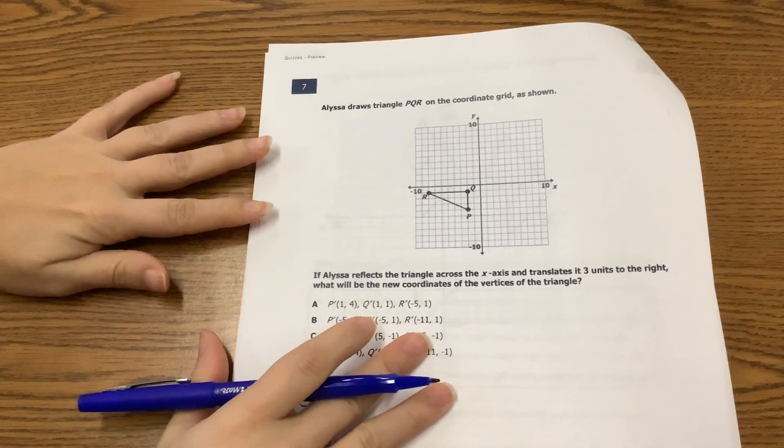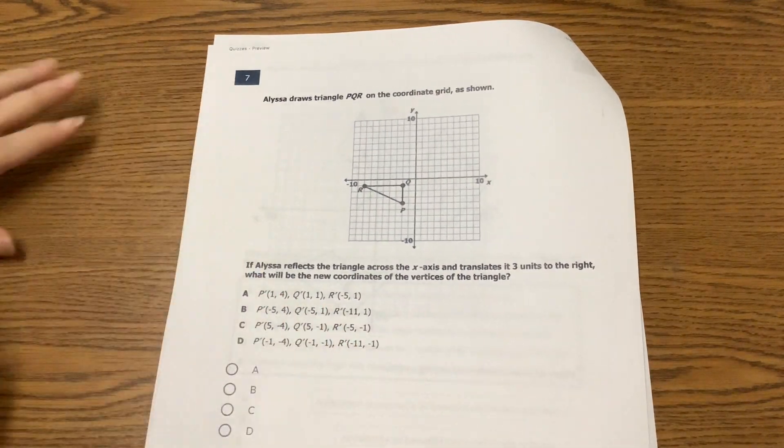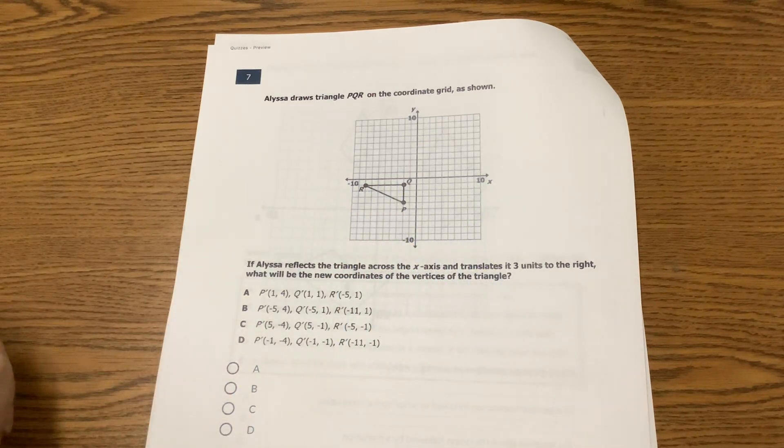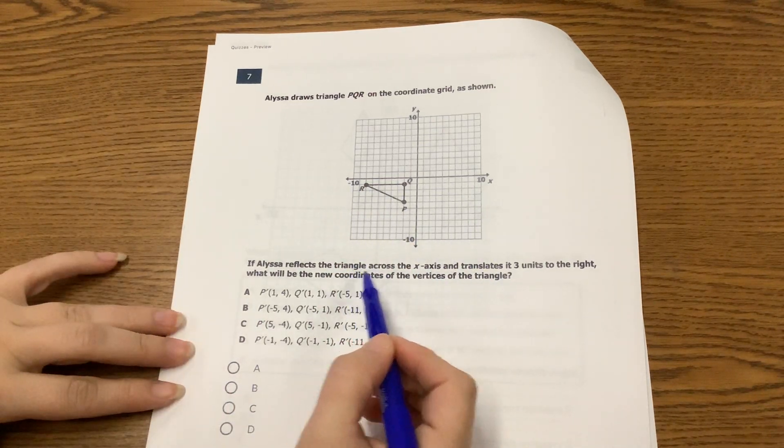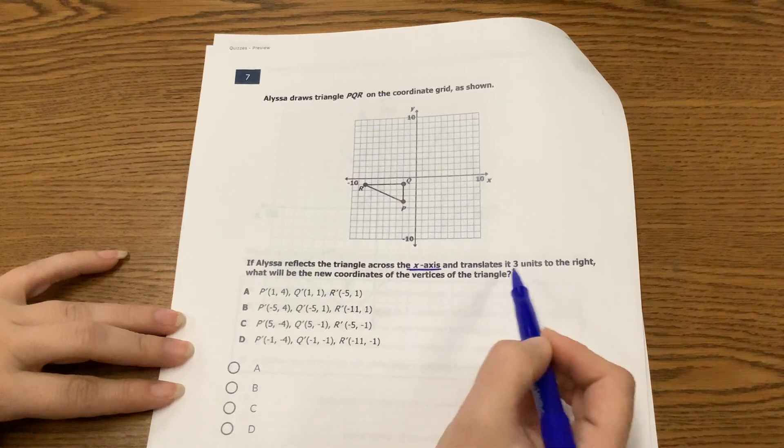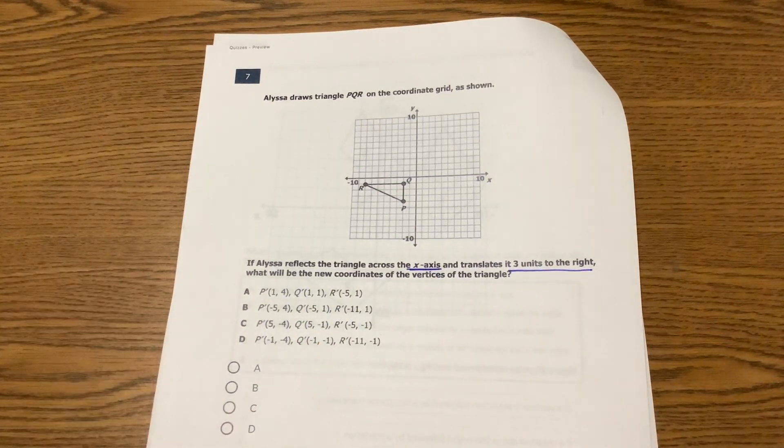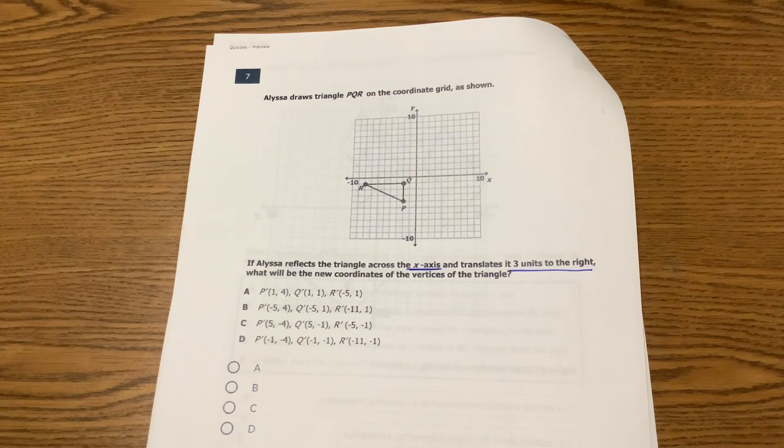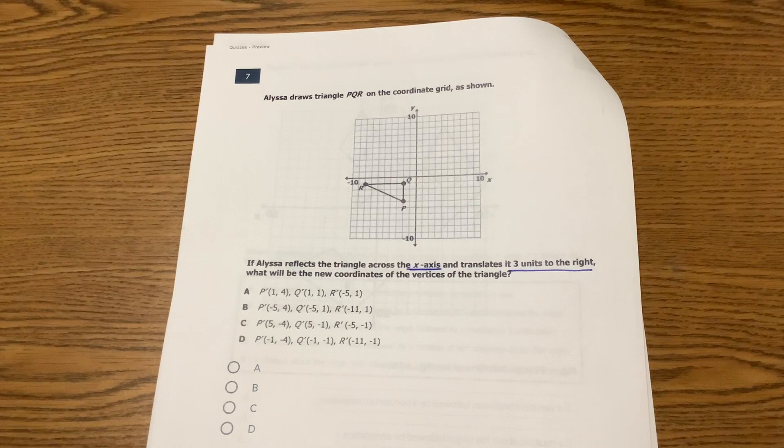The next question I would like for you to find is this one. It talks about triangle PQR, and it has us reflecting across the x-axis and then translating three to the right. Once you find it, go ahead and see if you can solve it.